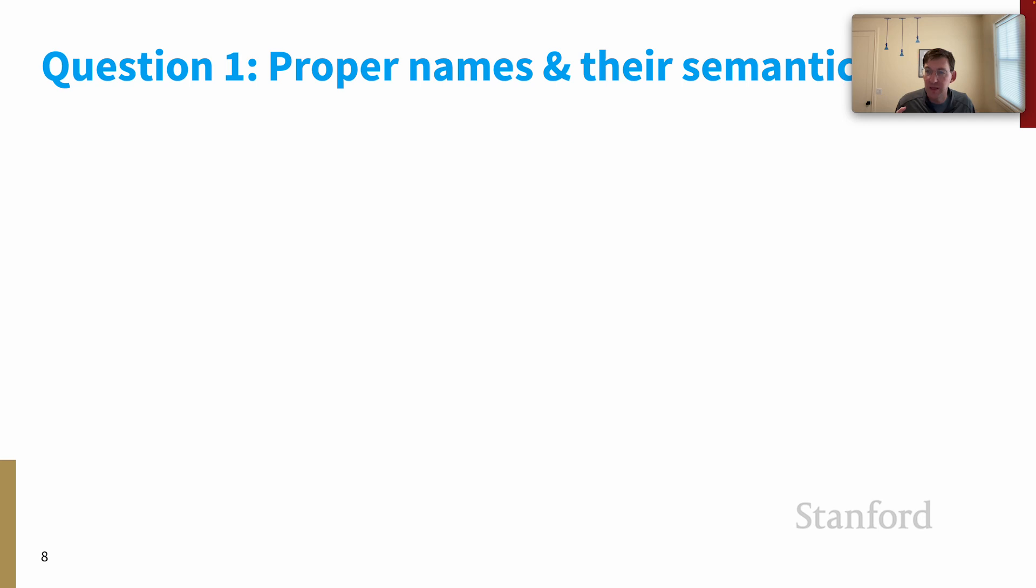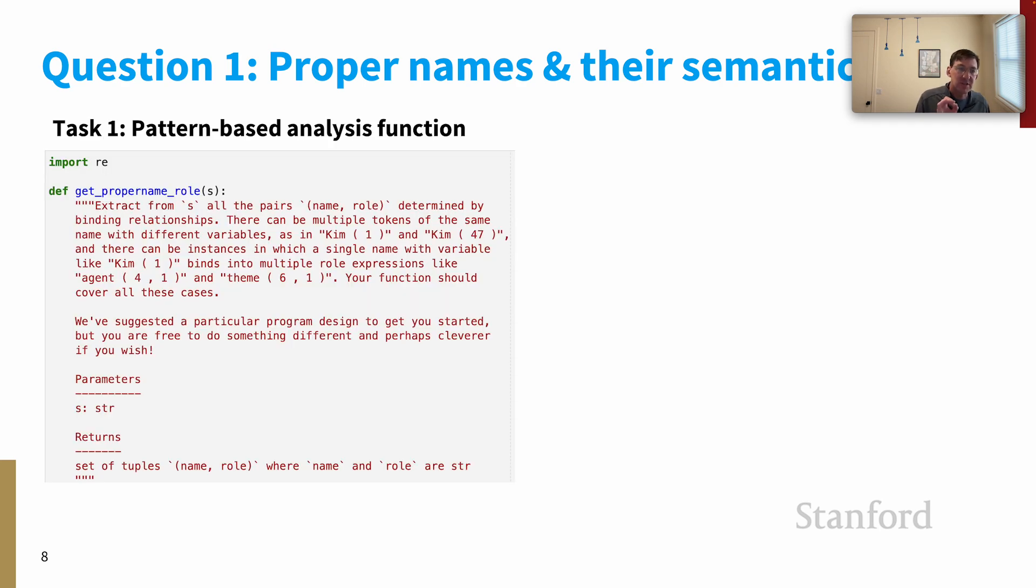Let's have a look at question one, proper names and their semantic roles. You are not training models for this question. This is good old-fashioned data analysis. It has two parts. For task one, you write a function called get_proper_role_names that takes in a logical form and extracts the list of all name role pairs that occur in that logical form.